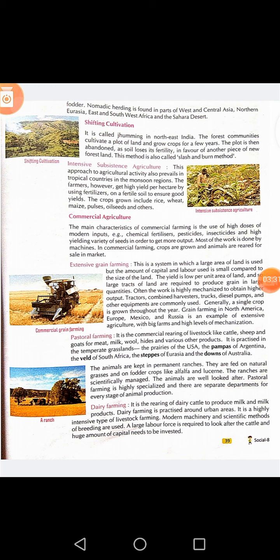For example, a farmer may cultivate any crop in a particular land for up to 5 years. After 5 years, he moves to another piece of land, abandoning the previous land he was using. This is known as the slash and burn method.